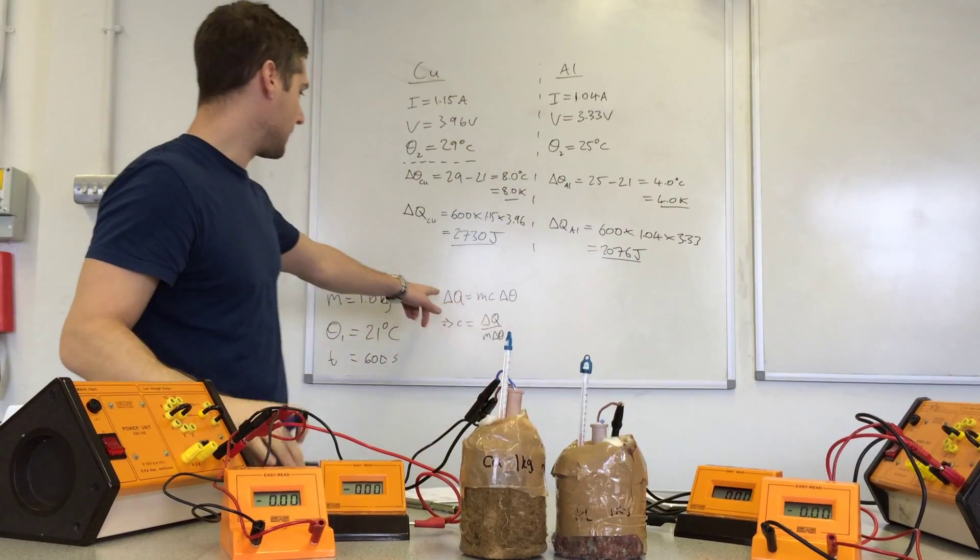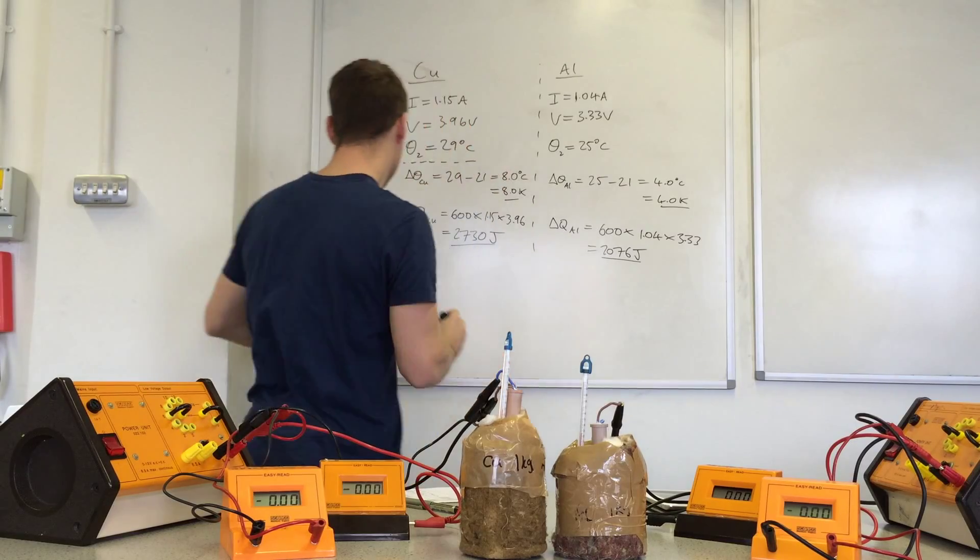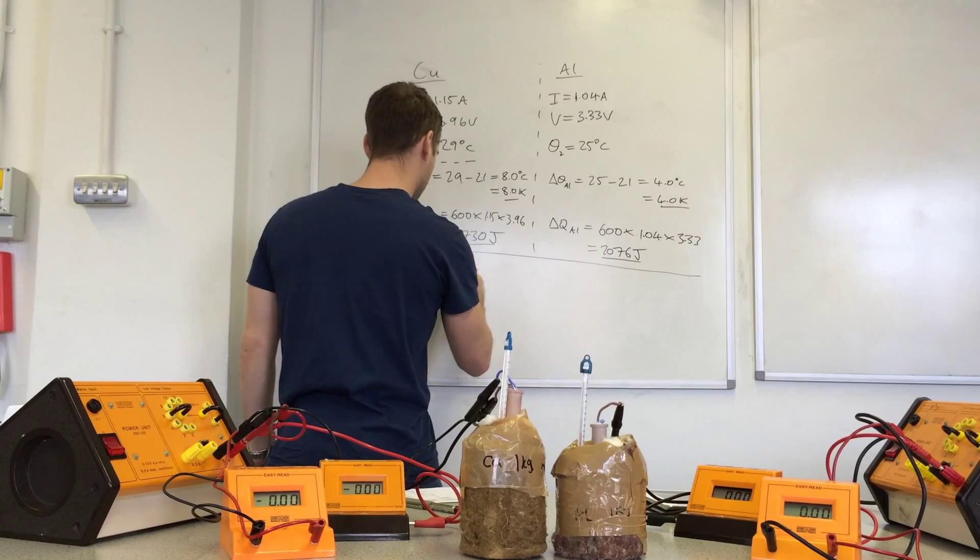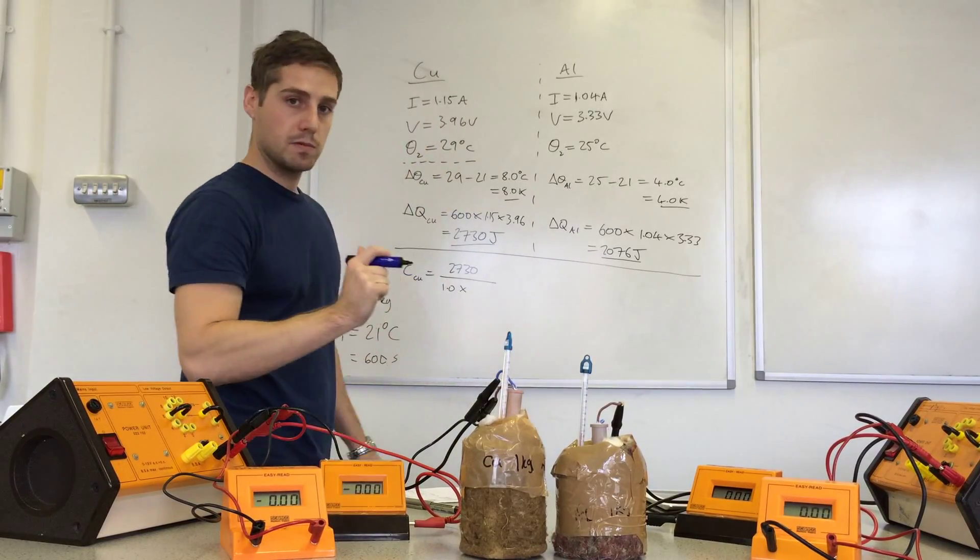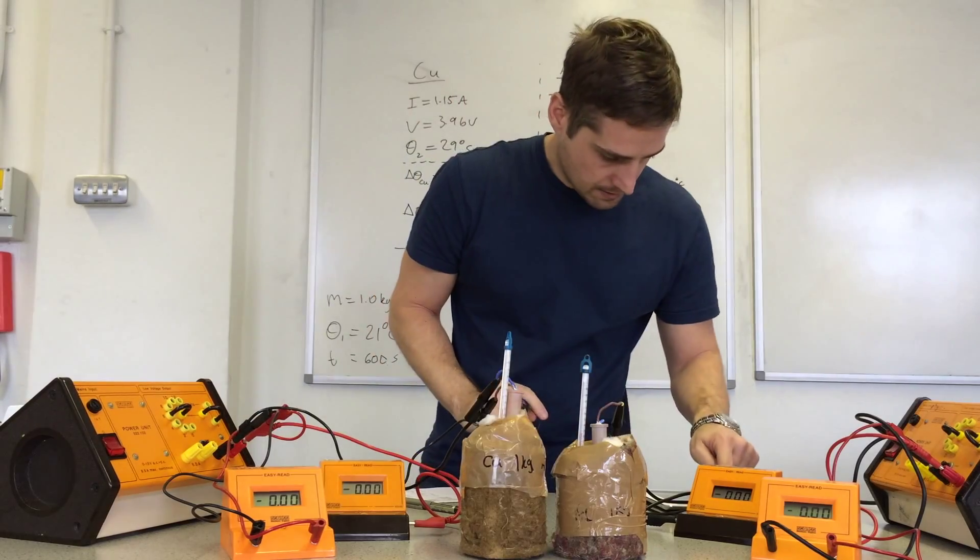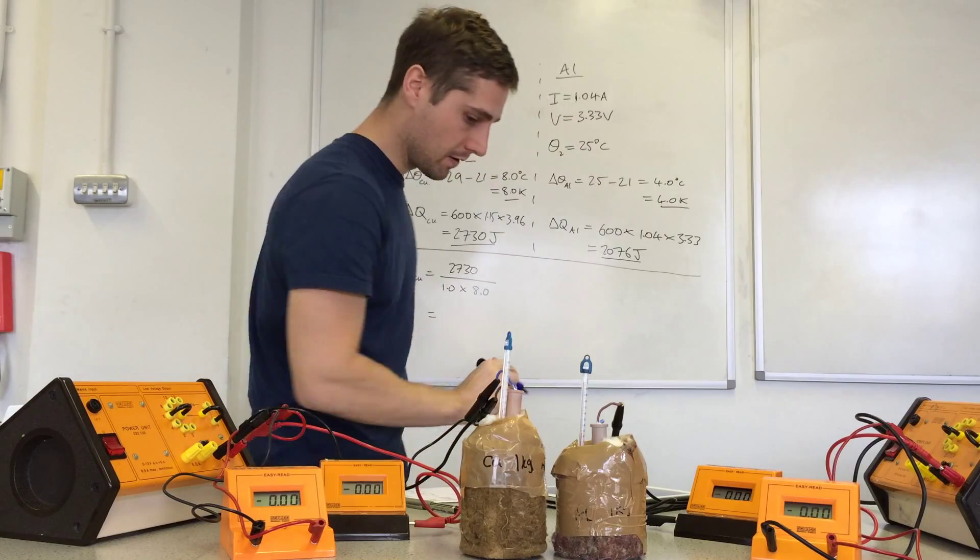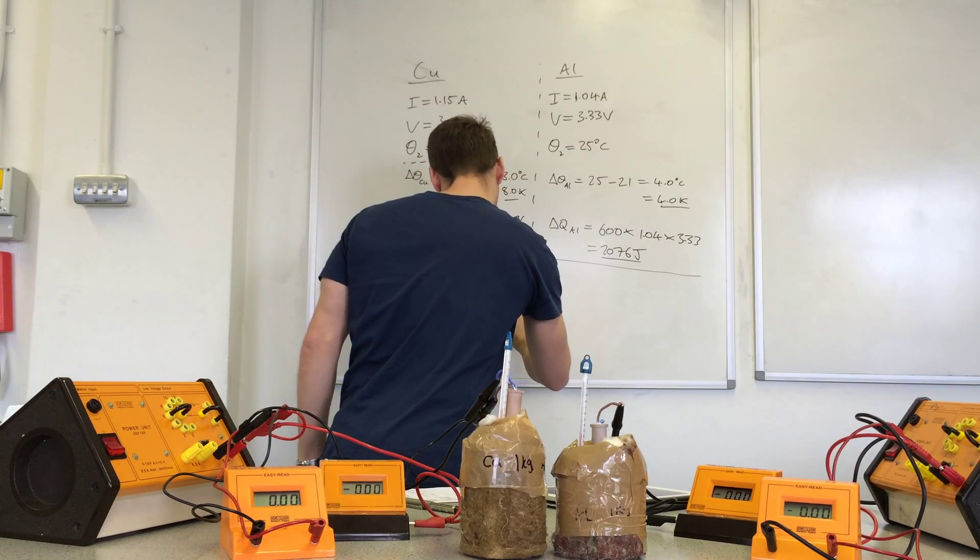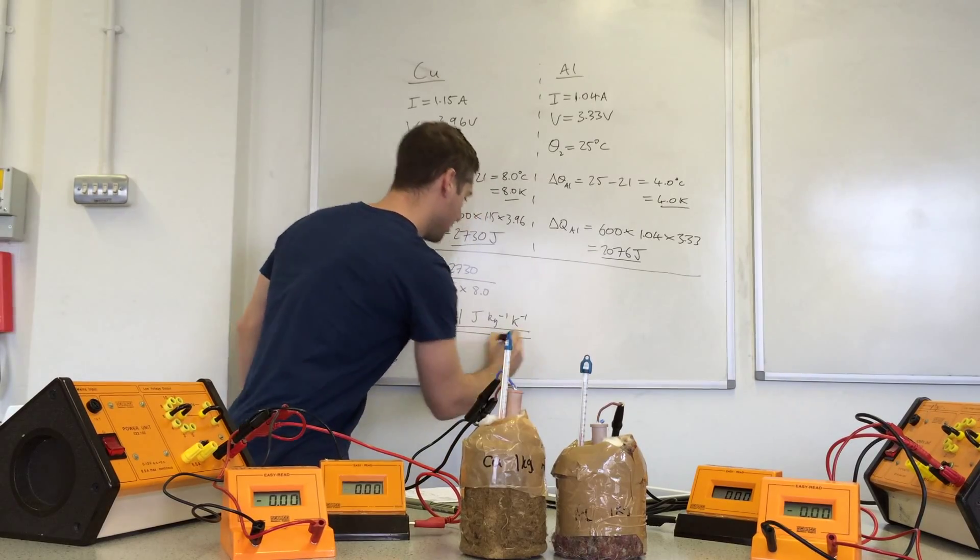We have our data now. We use this equation here. In this form here we are solving for the specific heat capacity. The mass is 1 kilogram times delta theta which is 8.0. So 2730 divided by 8 is 341 joules per kilogram Kelvin.